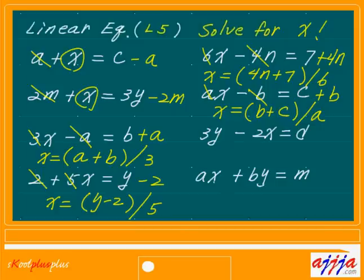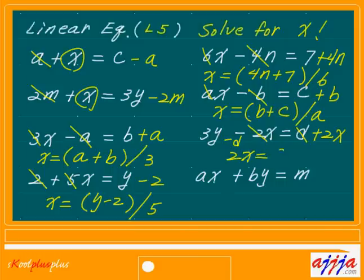What about this one? Oh, if you have a minus, I can exchange this one — 2x and d. I just scratch this one, then plus 2x. Then I scratch this one and move this one to my left-hand side — minus d. So 2x equals 3y minus d. I scratch this one, then divide by 2. Whole thing. x equals 3y minus d over 2.